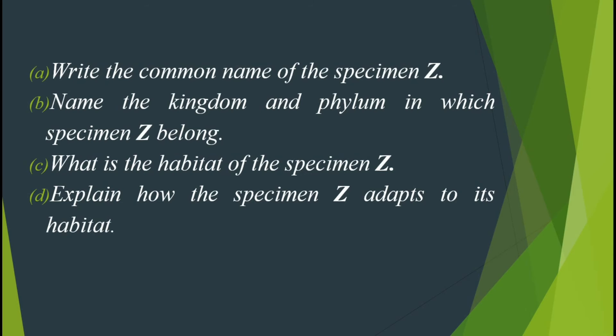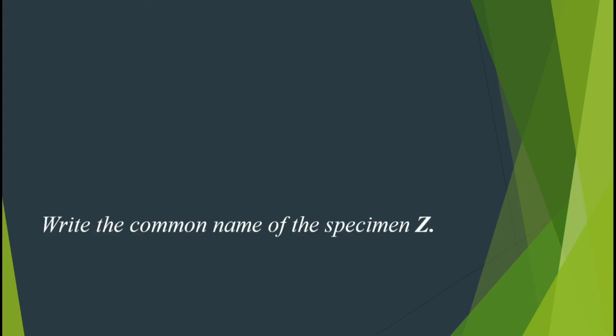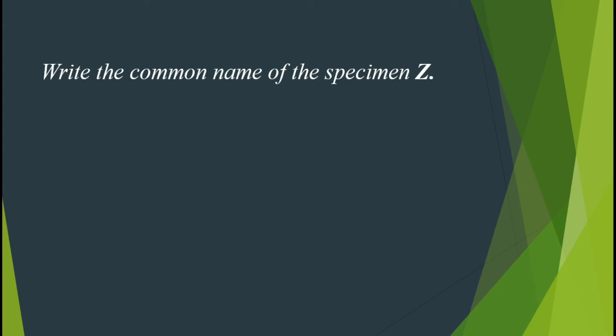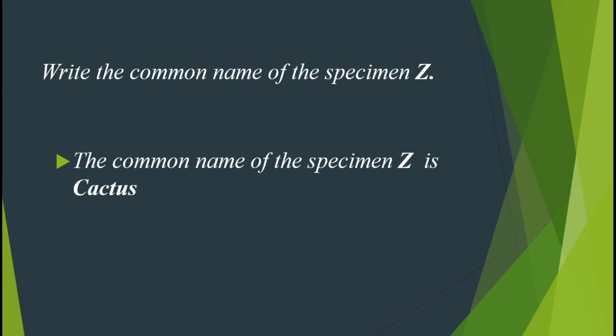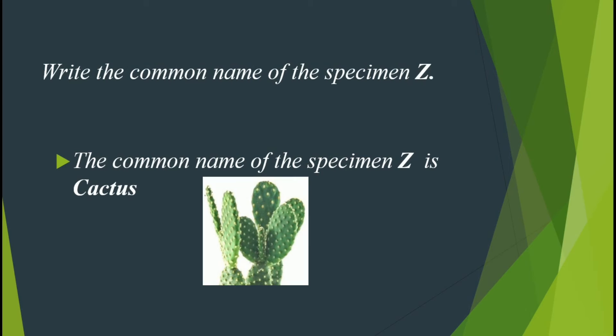Now let us start with the first question, which is asking us to write the common name of specimen D. The common name of specimen D is cactus — a cactus. As you can see in the picture below, the way it looks, this is a cactus plant.